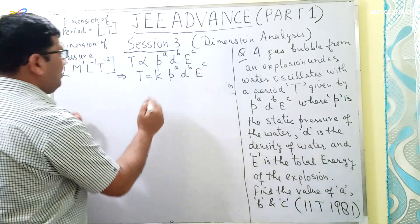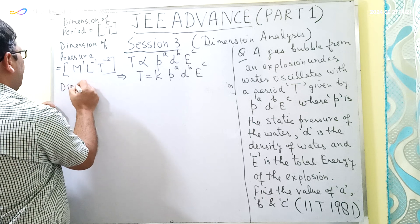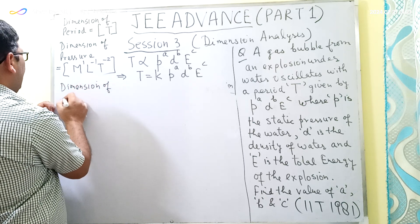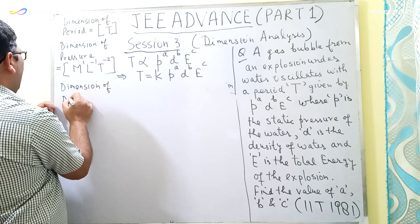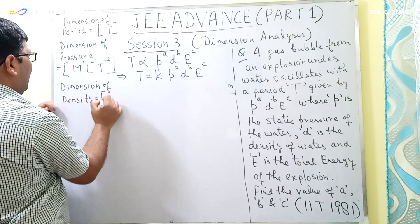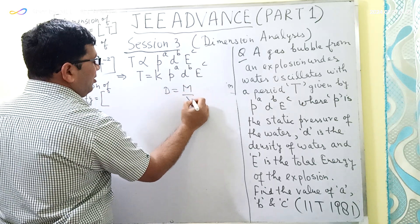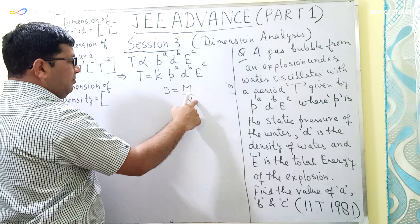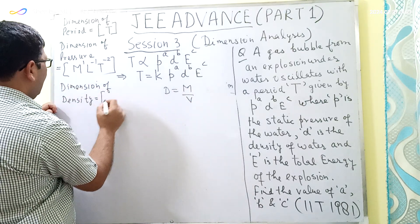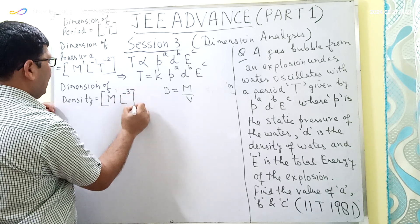Now we have to find the dimension of density. Density equals mass divided by volume. The dimension of mass is M and the dimension of volume is L³, so the dimension of density is M¹L⁻³.